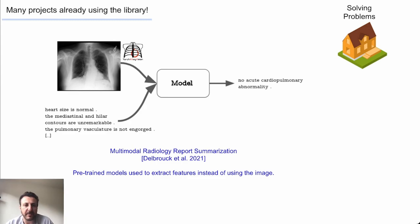The library has already been used by many projects, so I want to highlight a few. Here, the goal is to summarize radiology reports. Image features are extracted using a Torch X-ray Vision pre-trained model and combined with a model applied to text to produce the summaries.